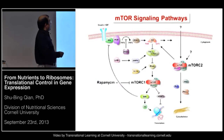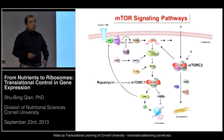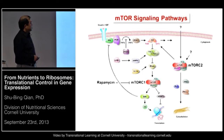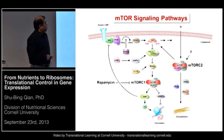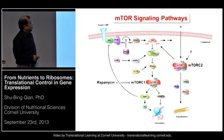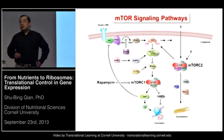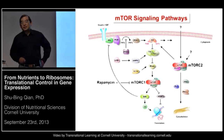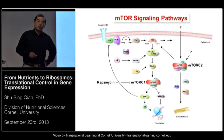mTOR forms two different types of multiprotein complexes with distinct biological functions. For example, mTOR associates with raptor and other proteins to form mTOR complex 1, whereas mTOR associates with rictor and sin-1 and other proteins to form mTOR complex 2. We're going to focus on mTOR complex 1, because this is the one mainly responsible for protein synthesis and is sensitive to rapamycin.